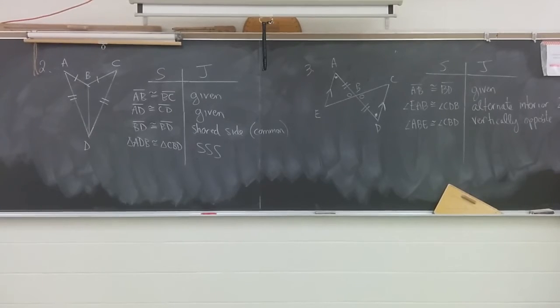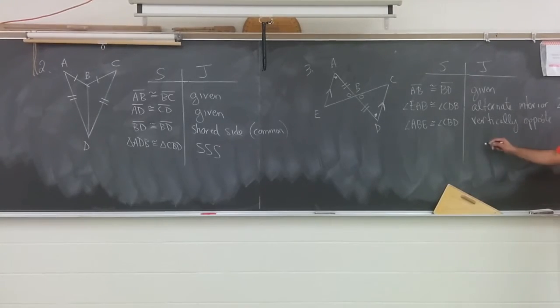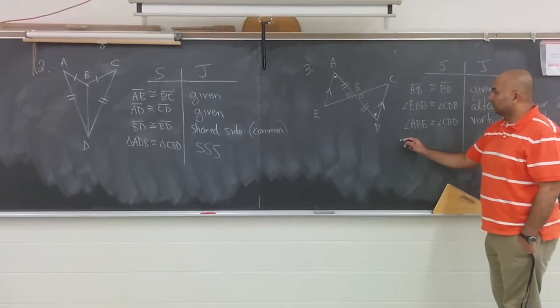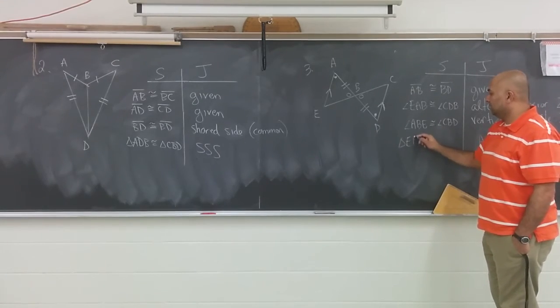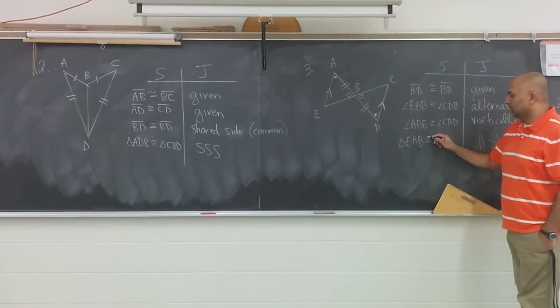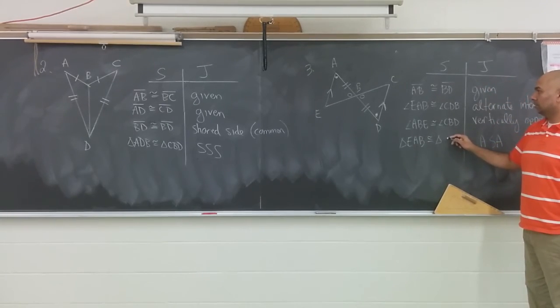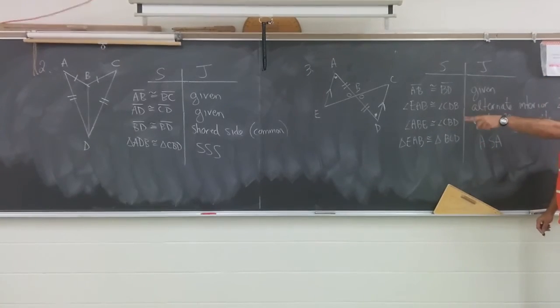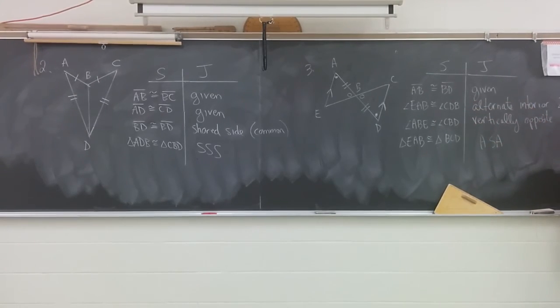What might be the final statement? ASA would be the justification. What would be the statement? Triangle EAB is congruent to triangle CDB. The first one was easy because everything was given. The second one was a medium because you had to figure out one thing and two were given. The last one's a harder one because only one thing was given and two you had to figure out. It could get harder. If nothing was given, you had to figure out all of them.